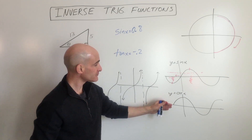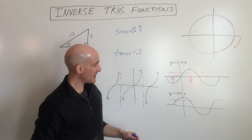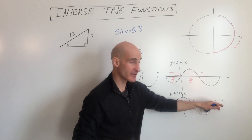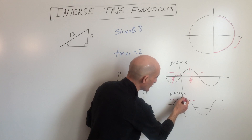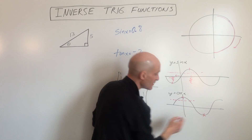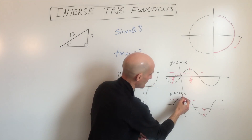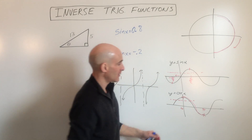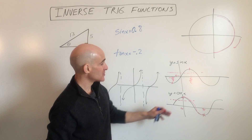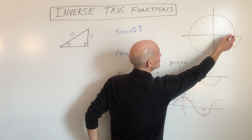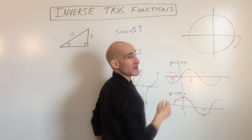Now for cosine, again you can see cosine fails the horizontal line test — it's going to fail. But if we restrict it from zero to pi, we're just looking at this piece of the graph right there, then it passes the horizontal line test and it does have an inverse. On the unit circle, that would equate to zero to pi — the first and second quadrants.